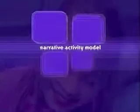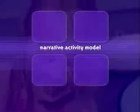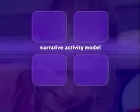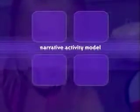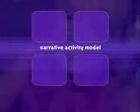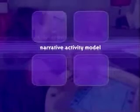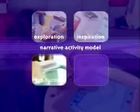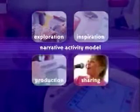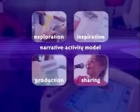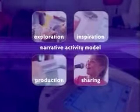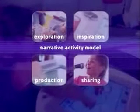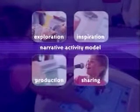The outcome of this research was the definition of a narrative activity model. This model provided a foundation for Colbo by describing the four main phases of storytelling: exploration, inspiration, production and sharing. Using these four phases as a creative framework, the team built the first of a series of prototypes.